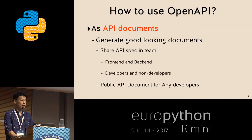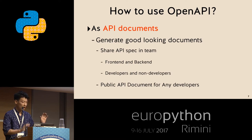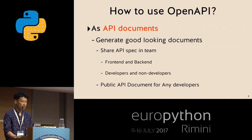How do you use OpenAPI? OpenAPI is your API spec itself, so you can use it as API documentation. OpenAPI tools can generate good-looking documents — HTML, CSS, and JavaScript — automatically. Once you write your API spec and generate the document, you can share it with your team: front-end, back-end, developers or non-developers. If your service has a public API, you can generate the document for developers all over the world.